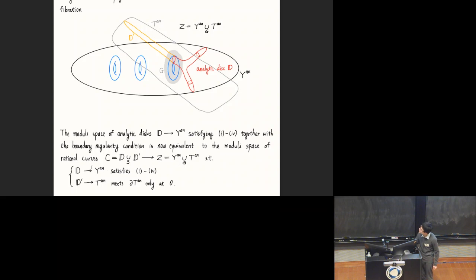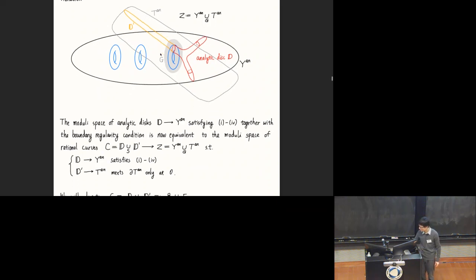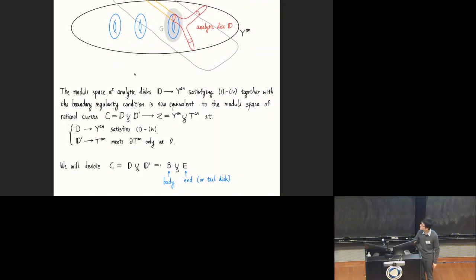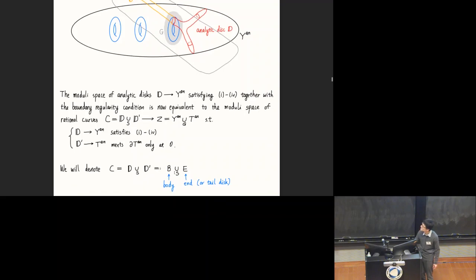We ask that the red disk D goes to the original log-Calabi-Yau satisfying any conditions we want, and the tail disk—the orange D'—goes to some auxiliary toric variety, meeting the toric boundary only at zero. We denote this union rational curve also as B union E. B is just D, because we think of it as the body that we really care about. And E is the end—it's the artificial tail that we put on in order to get a well-defined moduli space.